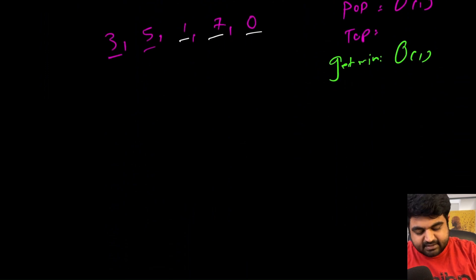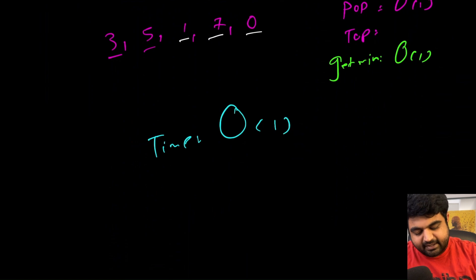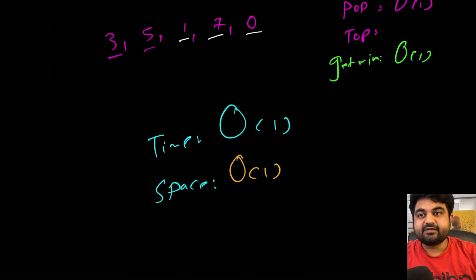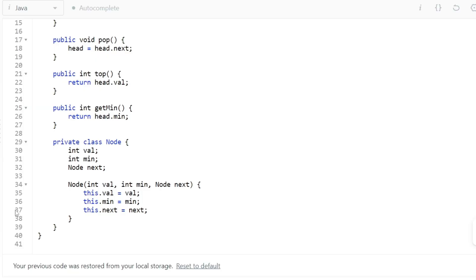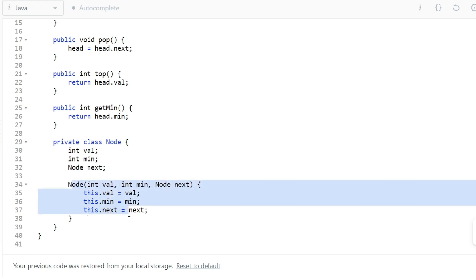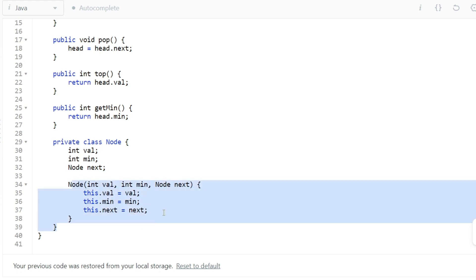In terms of time complexity, all operations run in O(1). For space complexity, it is debatable, but it can be considered O(1) because we are being asked to create a stack anyway and are not creating extra separate space. Now let's define the node class, which stores three values: the value at each position, the min value, and a reference to the next node, with a simple constructor.